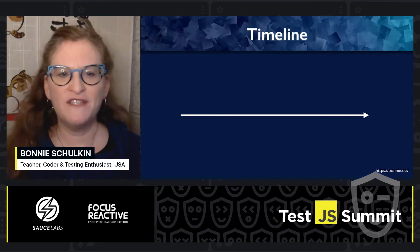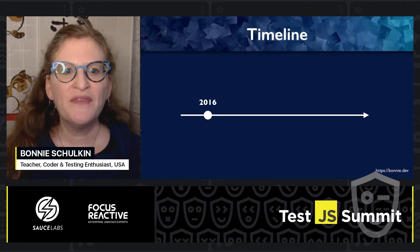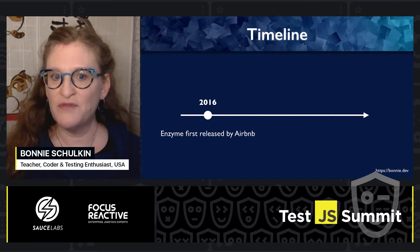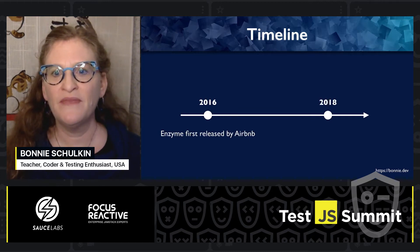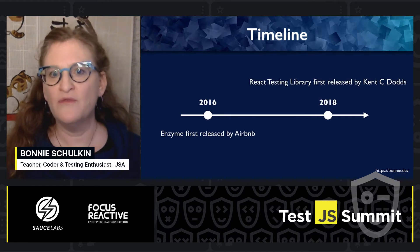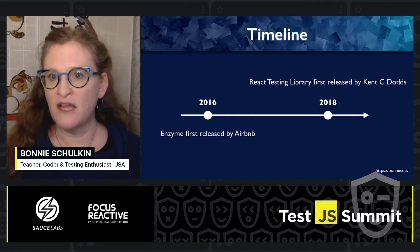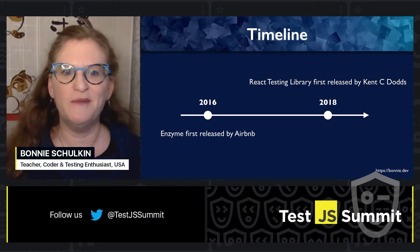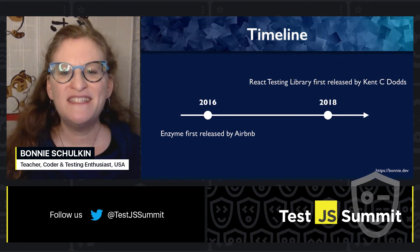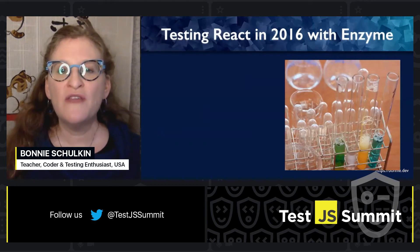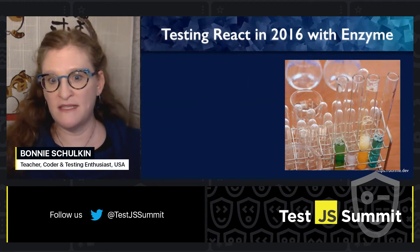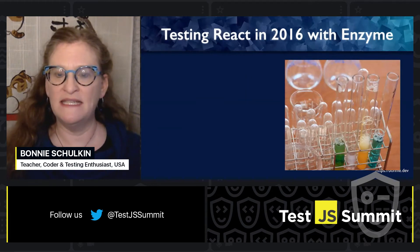Here's a very brief timeline. In 2016, Enzyme was first released by Airbnb. Then in 2018, React Testing Library was first released by Kent C. Dodds. This gives you a backdrop to know that when I started testing React in 2016, I used Enzyme because Testing Library didn't exist.